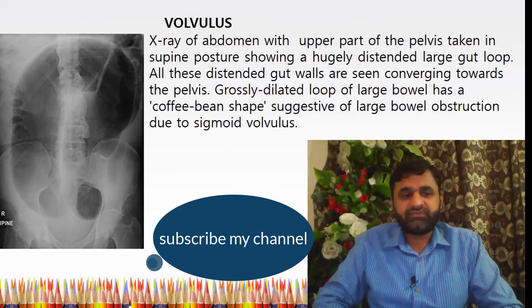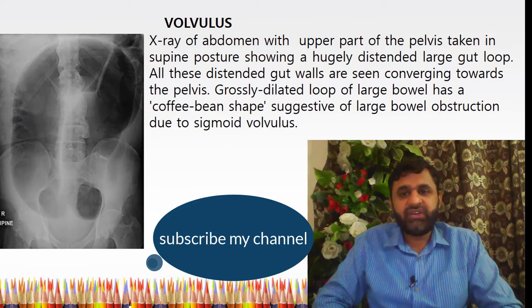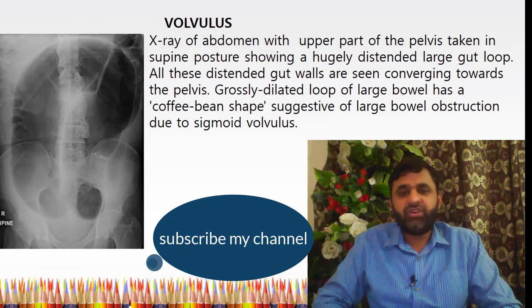This X-ray of the abdomen with the upper part of the pelvis, taken in supine posture, shows a hugely distended large bowel loop. All distended gut loops are seen converging towards the pelvis. The grossly dilated loops of large bowel have a coffee-bean shape, suggesting large bowel obstruction due to sigmoid volvulus, and this description is evident in the X-ray.